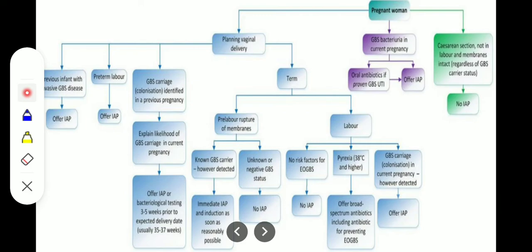When planning delivery, if the patient reaches term, there are two conditions: pre-labor rupture of membrane and in labor. In case of rupture of membrane, if we have non-GBS carrier detected, we will give immediate IAP and induction as soon as reasonably possible. If we have unknown or negative GBS status, we will not give IAP.